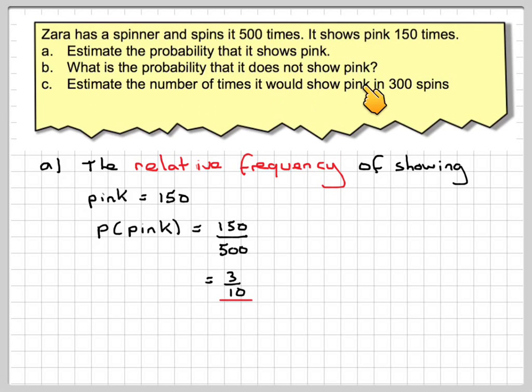What is the probability that it does not show pink? The probability of not being pink is 1 minus the probability of actually showing pink. So it's going to be 1 minus 3 tenths. So you've got to take away 3 tenths from 1. That's going to leave 7 tenths left. So the answer for the probability of not being pink is 7 out of 10.